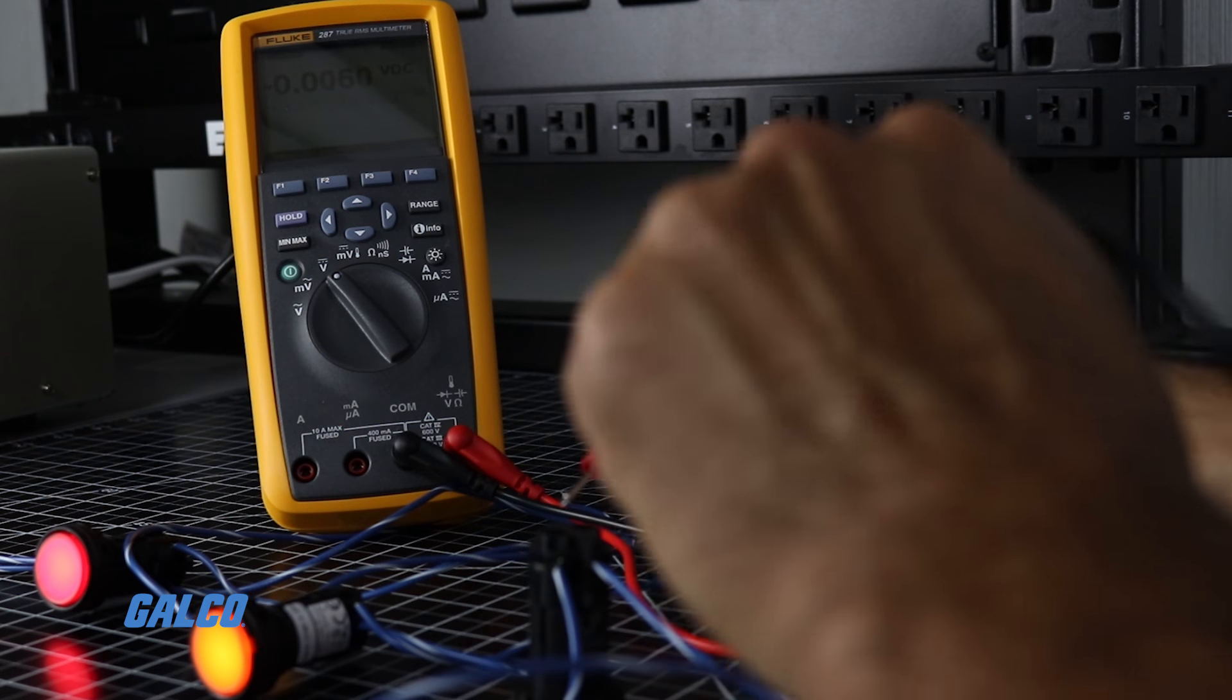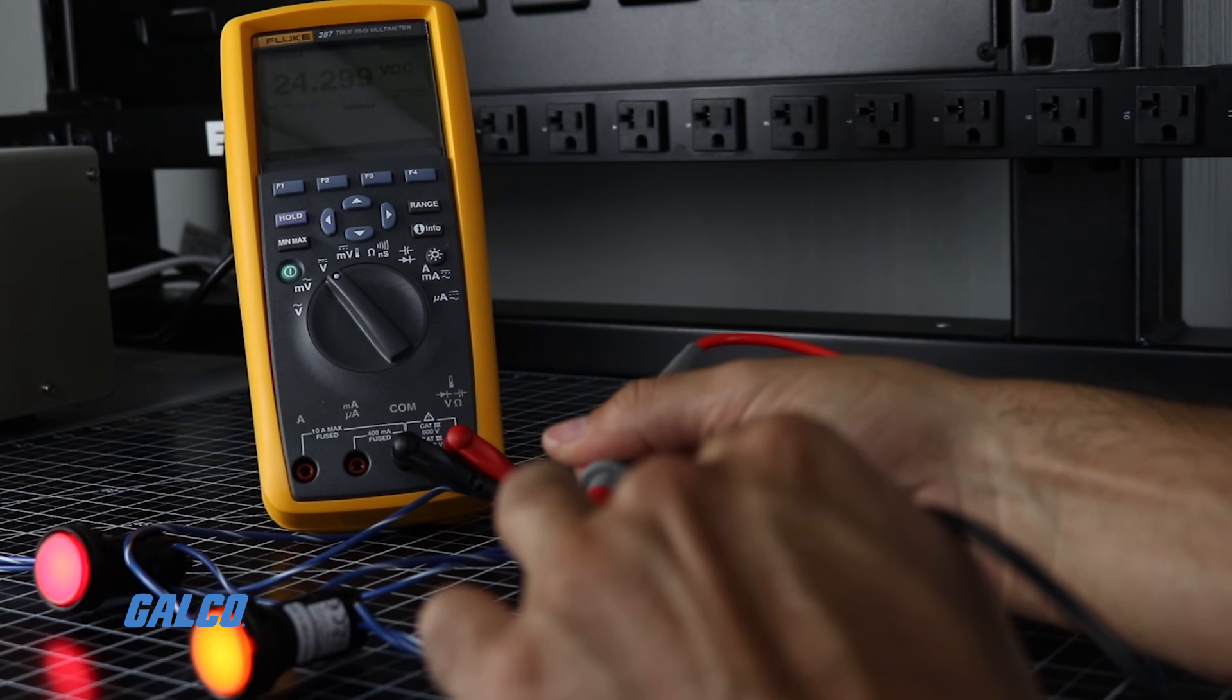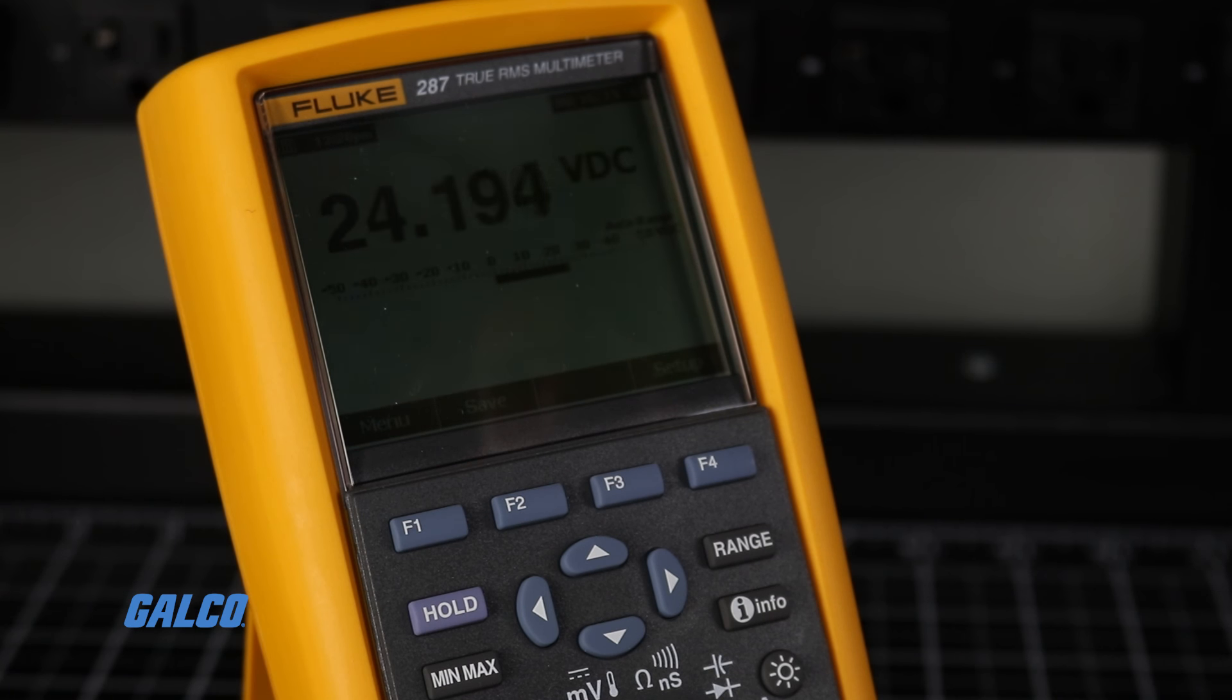Unlike a current measurement, a voltage test does not need to be entirely redirected through the meter. Read the number on your display, keeping in mind how you have your measurement range configured.